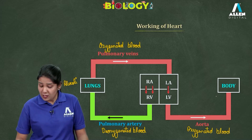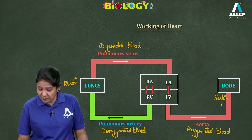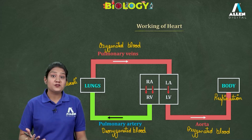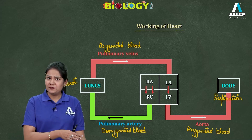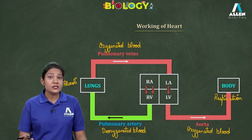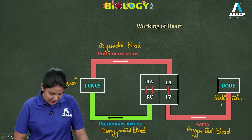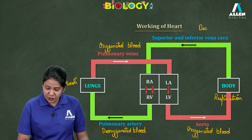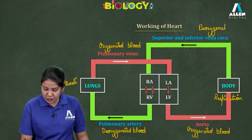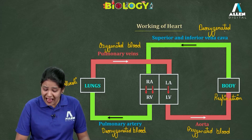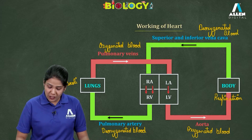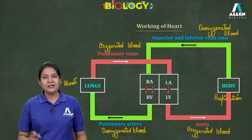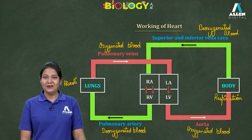The oxygenated blood goes to the body parts because all body parts perform the process of respiration to produce energy. As a result of respiration, energy in the form of ATP is released and carbon dioxide is formed, so the blood becomes deoxygenated. This deoxygenated blood is then brought by the superior and inferior vena cava back to the right atrium, and the same cycle continues.